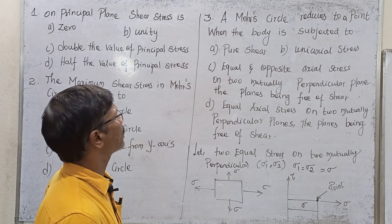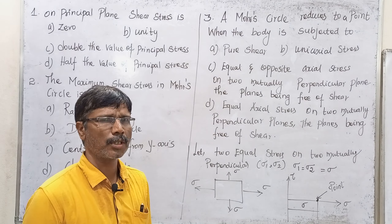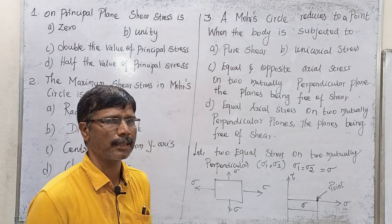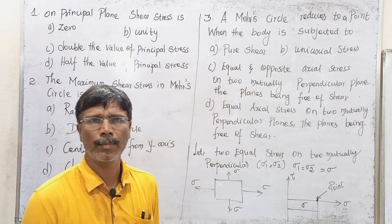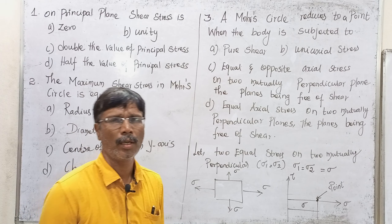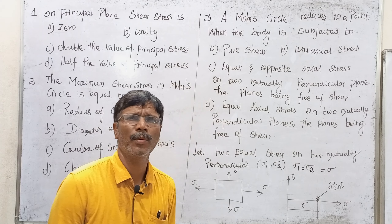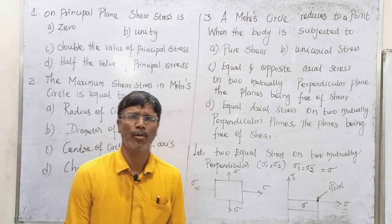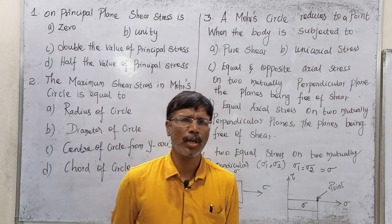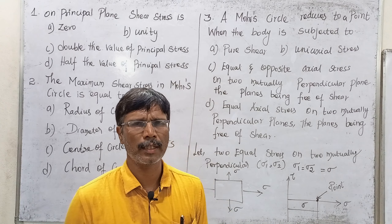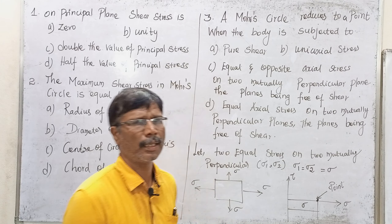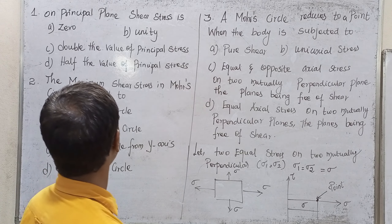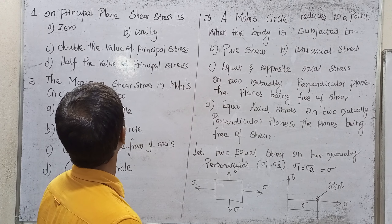Let's talk about principal stress. How do you think about the principal plane? The principal plane is where shear stress equals zero. If you have a computer exam, you have a punch; if you have zero, you have a wipe. So the principal plane has shear stress equal to zero, and option A is zero.